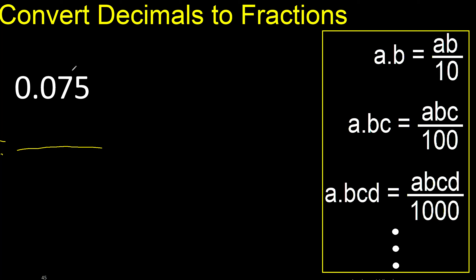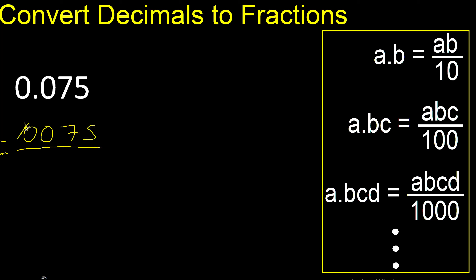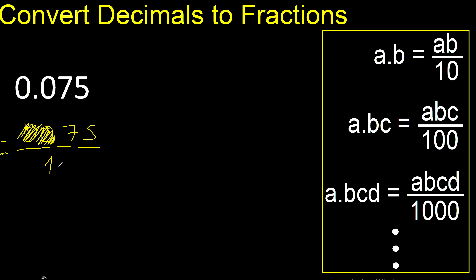First, write all the numbers without the decimal point. Like this. Eliminate the zero on this side. Here, always put the number 1. After the point there are 3 numbers, therefore 3 zeros.